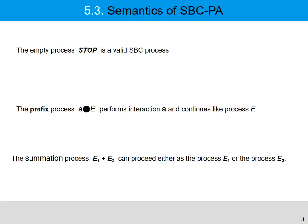Now we discuss the semantics of SBC process algebra. The first process, the empty process stop, is a valid SBC process meaning an empty process. The second process, the prefix process A dot E, means it will perform interaction A then continue as process E. The third rule, the summation process E1 plus E2, means it can proceed either as process E1 or process E2.